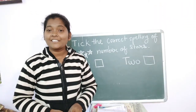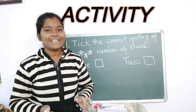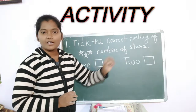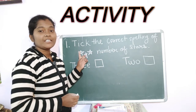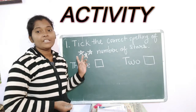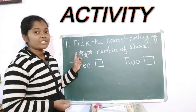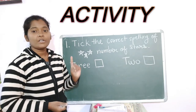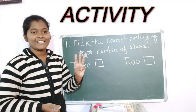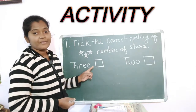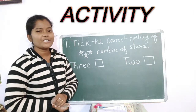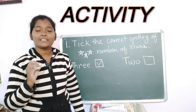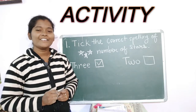Dear kids, after finishing writing 2 pages — the number names of 3 and 4 — let's do some activity. Here is one question: tick the correct spelling of the number of stars. You have to count the stars and choose the correct number name. Start counting the stars: 1, 2, 3. How many stars? 3 stars. So children, what is the correct spelling of 3? The options are T-H-R-E-E and T-W-O. Which option is correct? Yes — T-H-R-E-E — 3. You have to think and then choose the correct spelling.